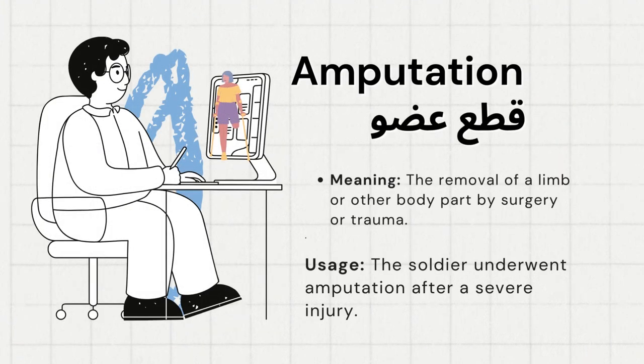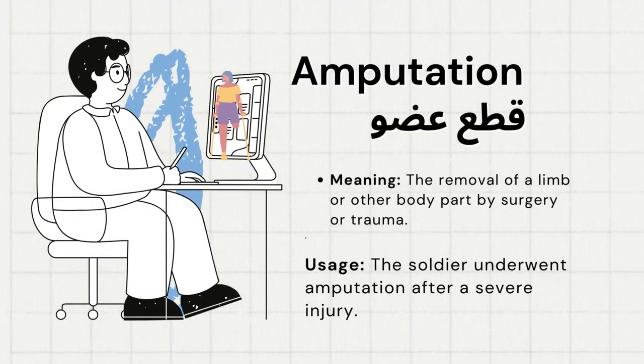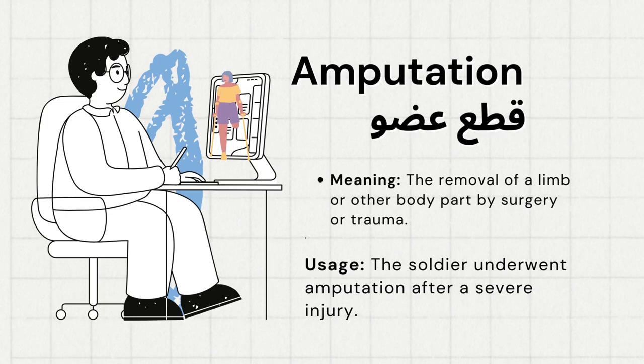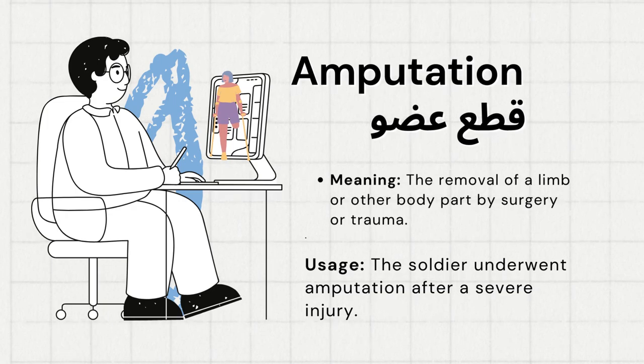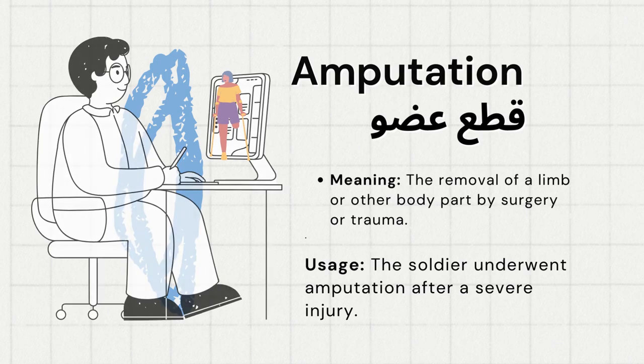Amputation. Meaning: the removal of a limb or other body part by surgery or trauma. Usage: The soldier underwent amputation after a severe injury.